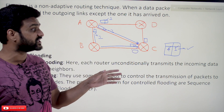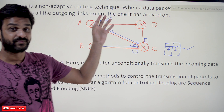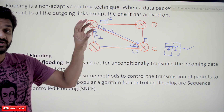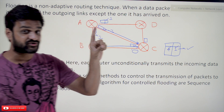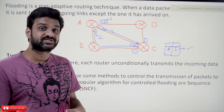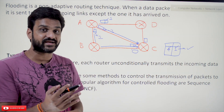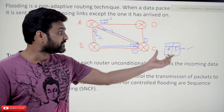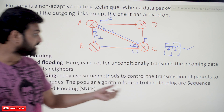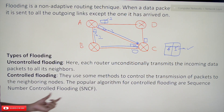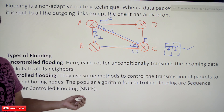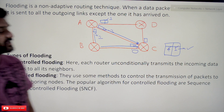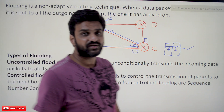Since the packet has already arrived, all the duplicate packets will be discarded and they are not transmitted back into the network. This is how flooding is controlled — there is control in the flow of packet flooding using the Sequence Number Controlled Flooding technique.